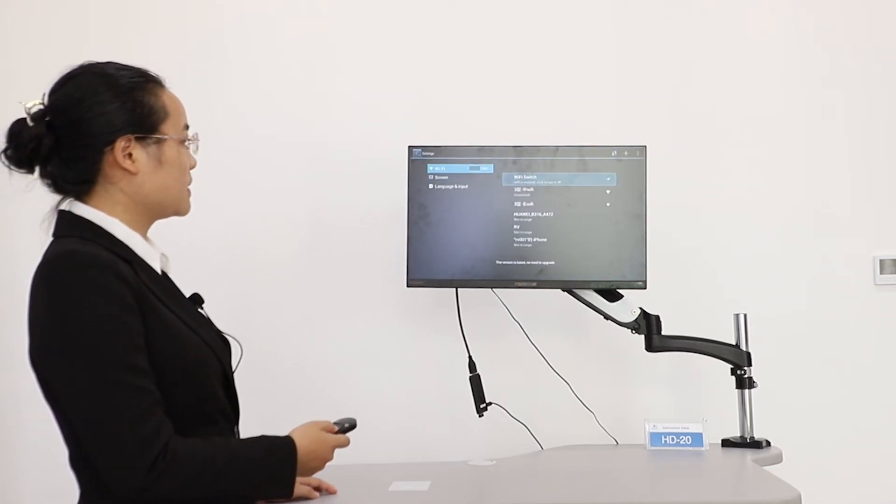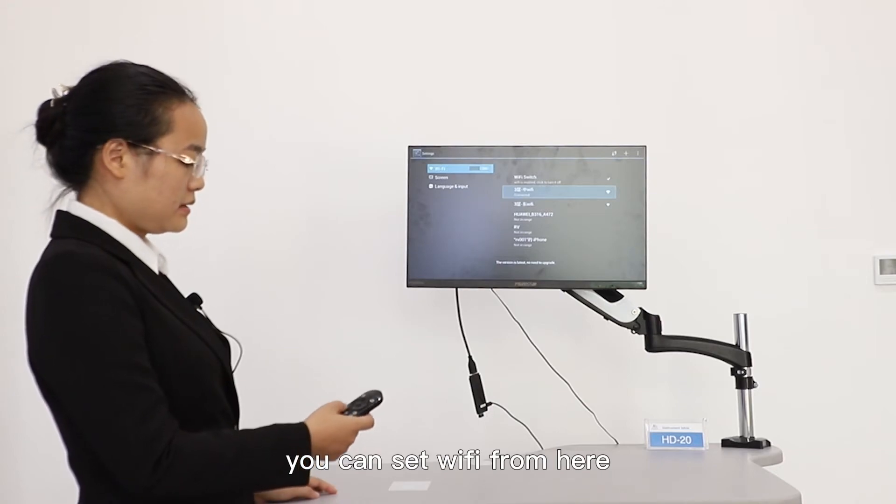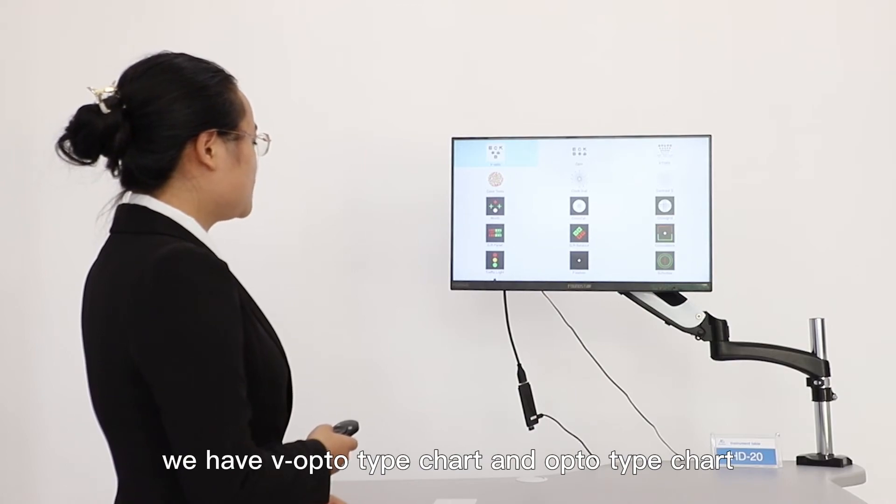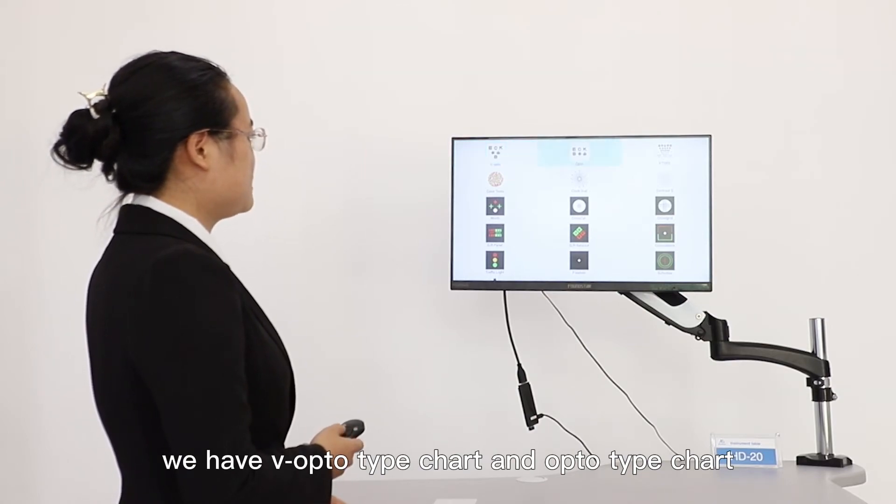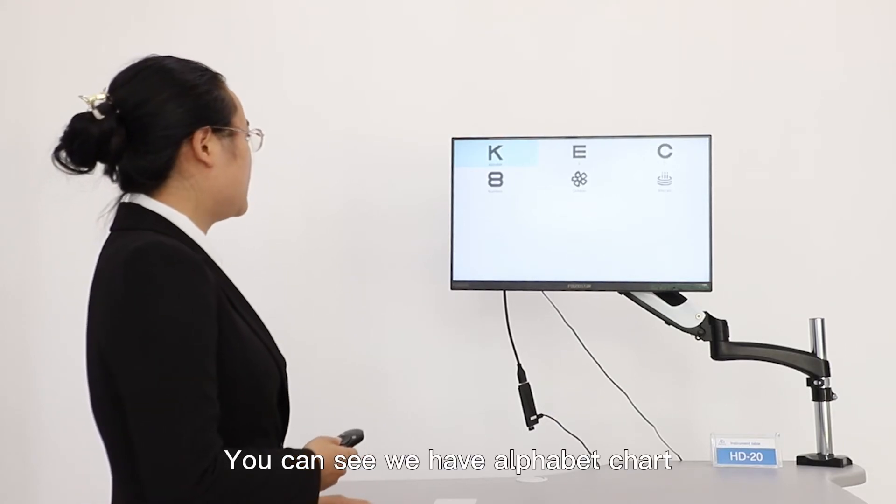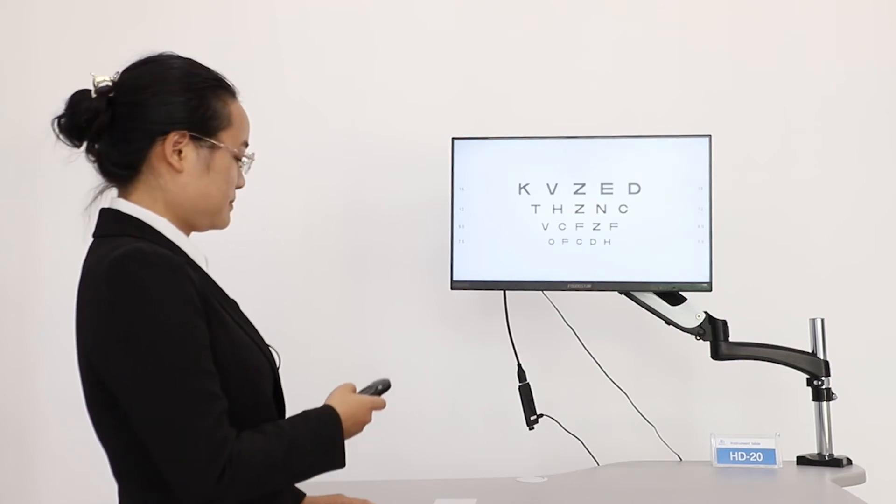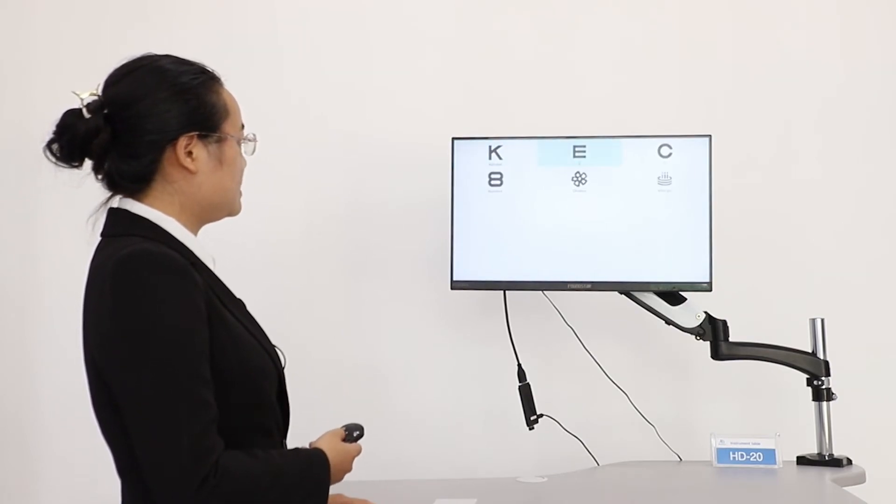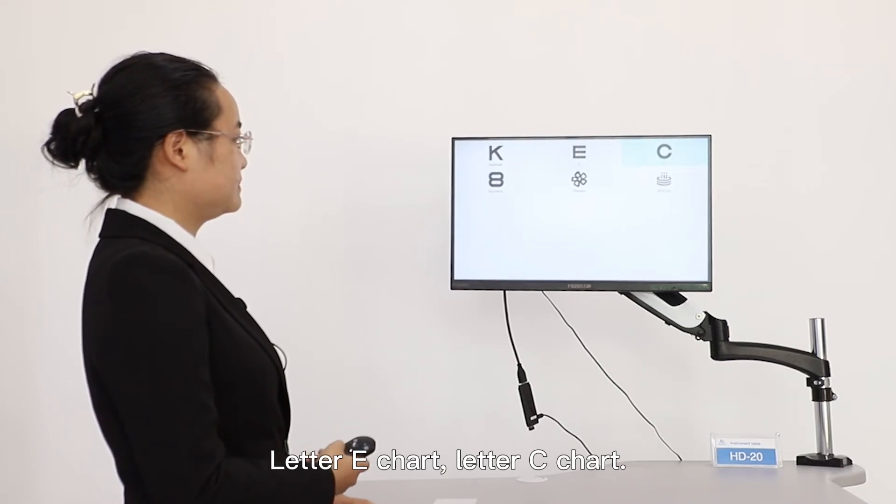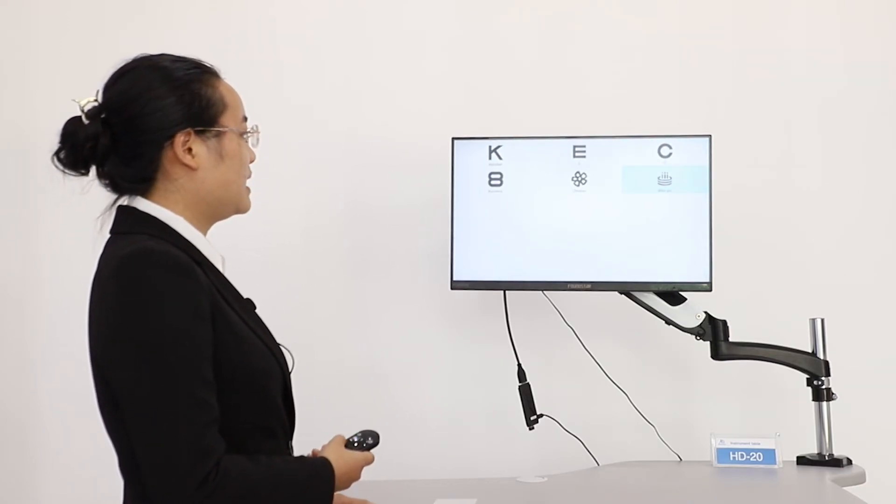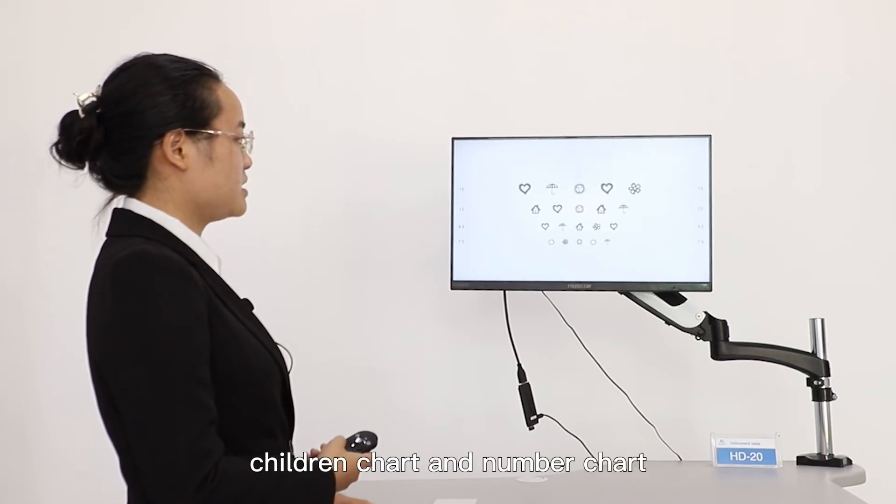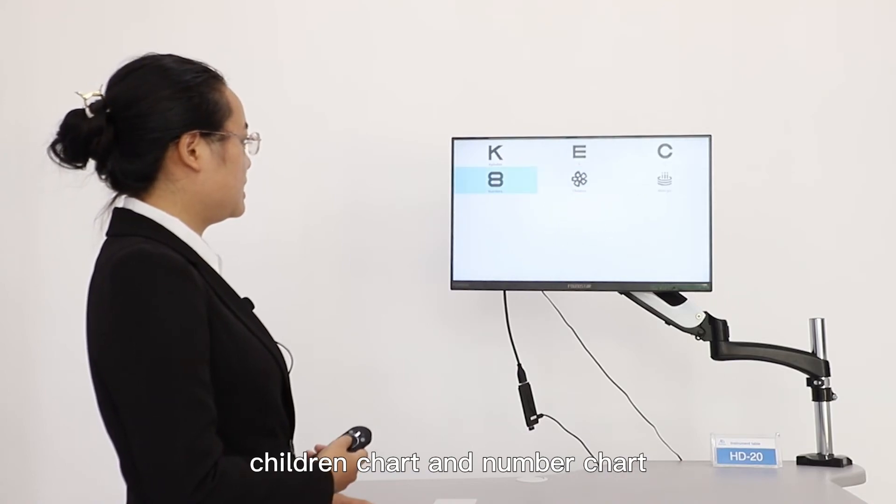As you can see, you can set WiFi from here. For vision chart, we have V-optotype chart and optotype chart. Here you can see, we have alphabet chart, letter E chart, letter C chart, element picture, children chart, and number chart.